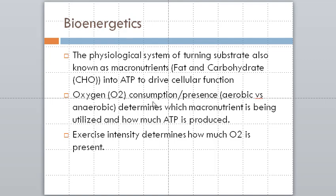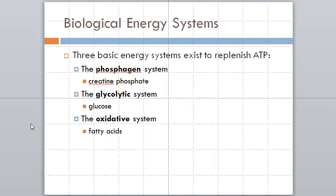Bioenergetics is the process of turning substrate — fat and carbohydrate — into ATP. Oxygen is either present, aerobic, or not present, anaerobic, and determines both what macronutrient is being utilized and how much ATP is produced. This oxygen environment is driven by exercise intensity. So the whole chain of command — which fuel source you're using, fat or carbohydrate, whether oxygen is present — is all determined by what exercise intensity you're at.